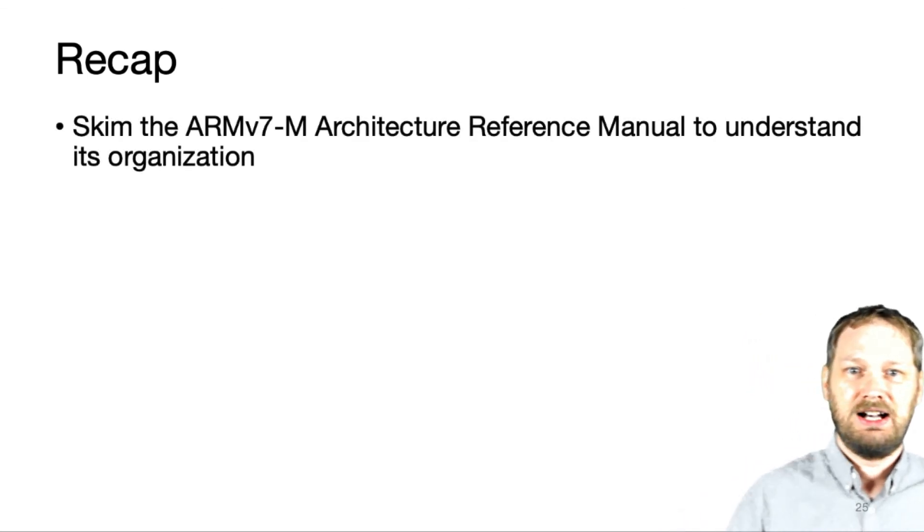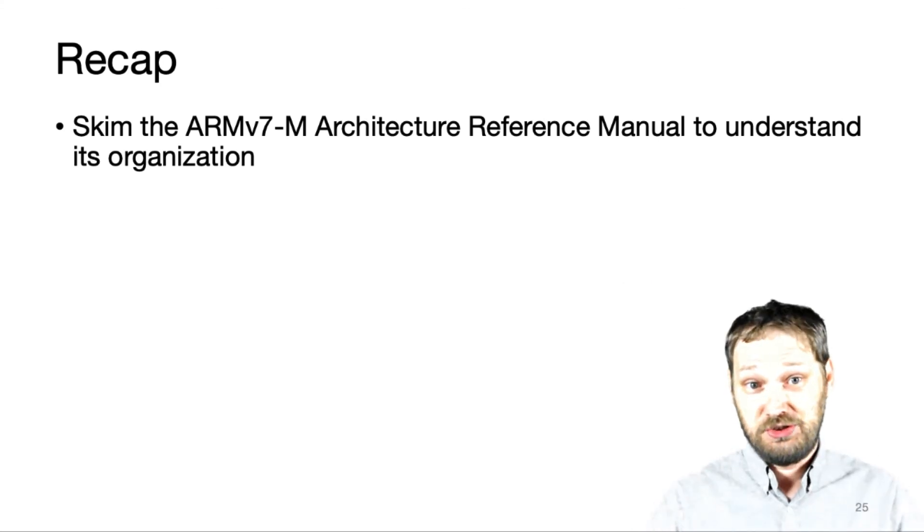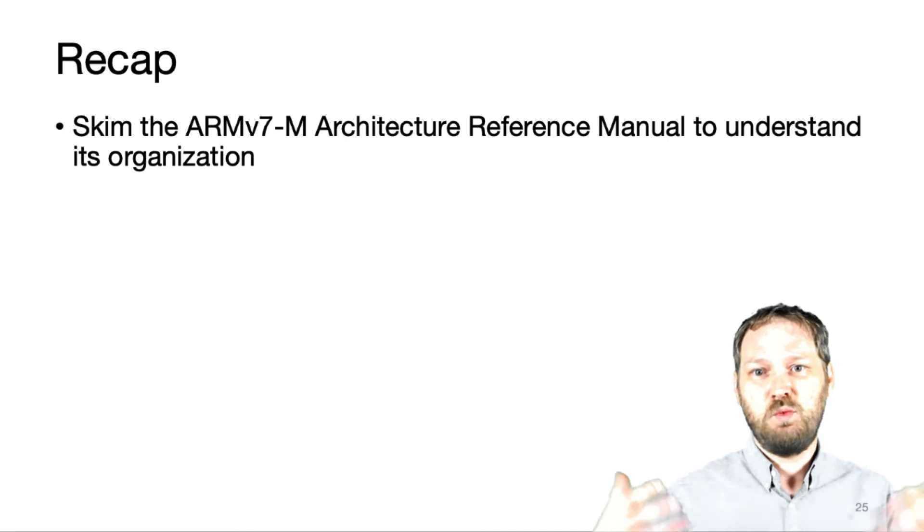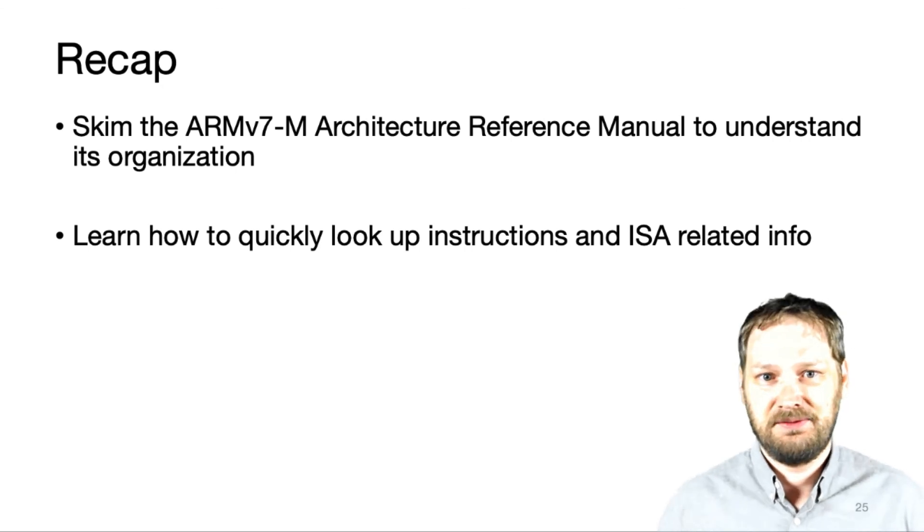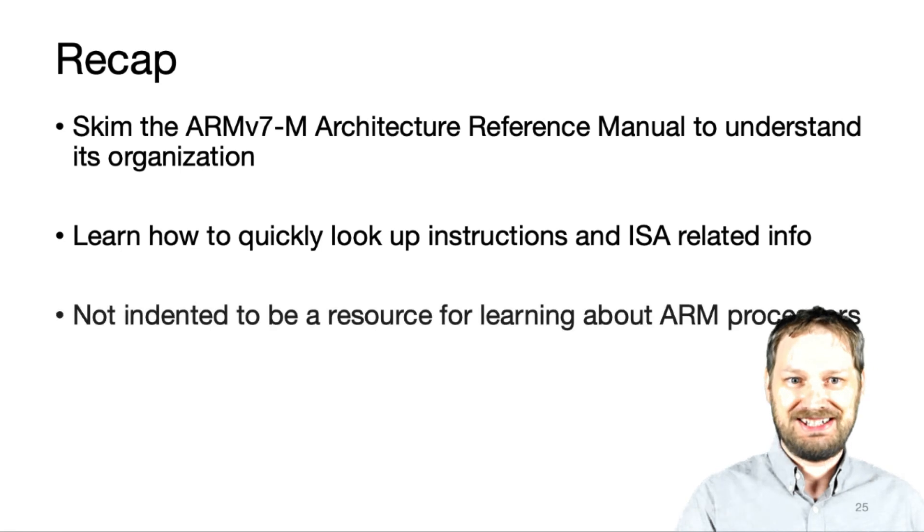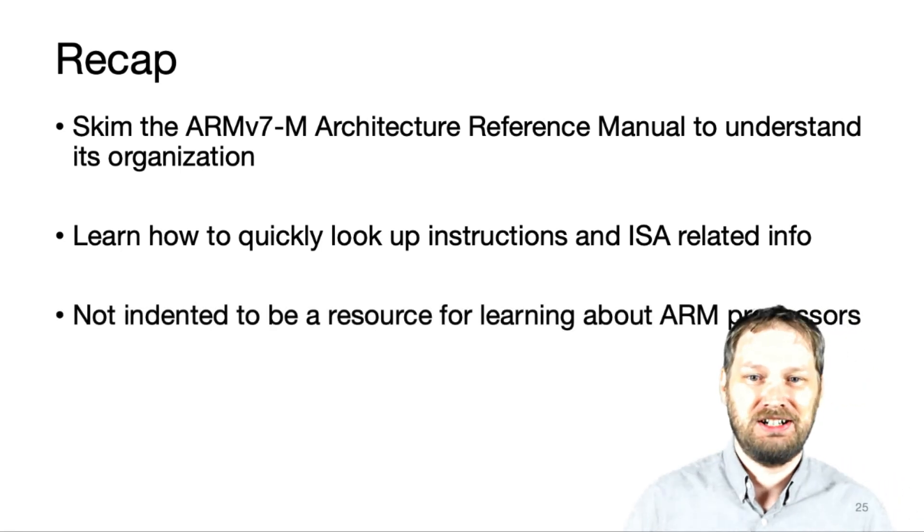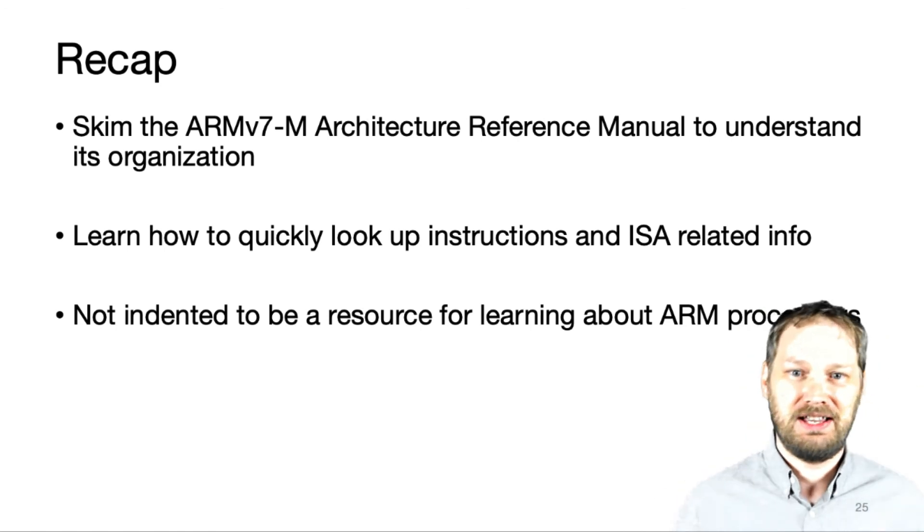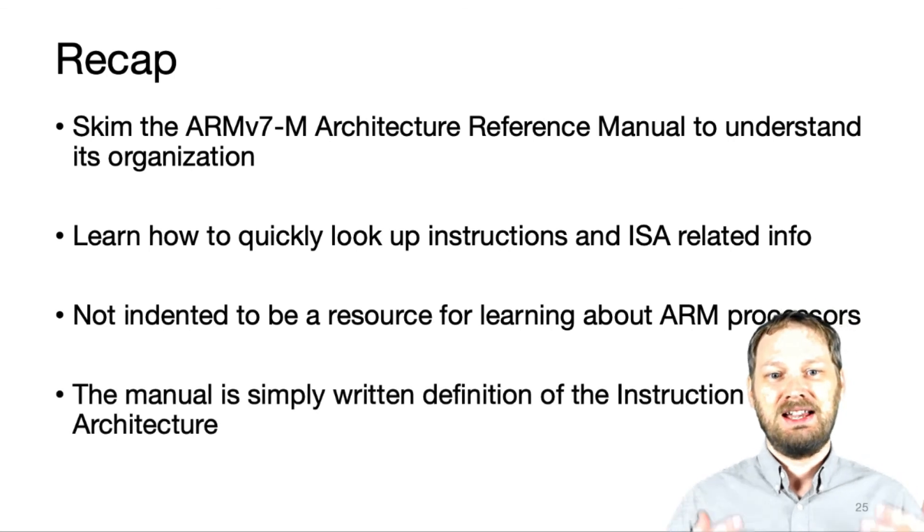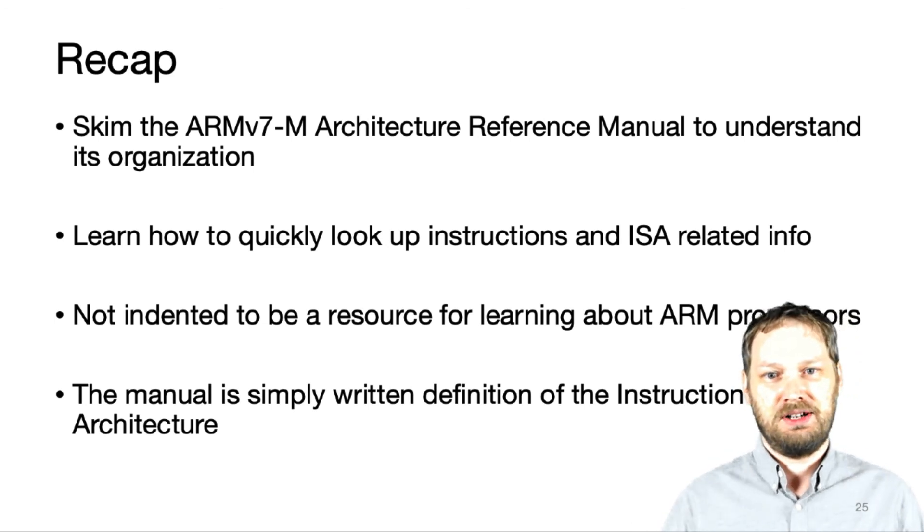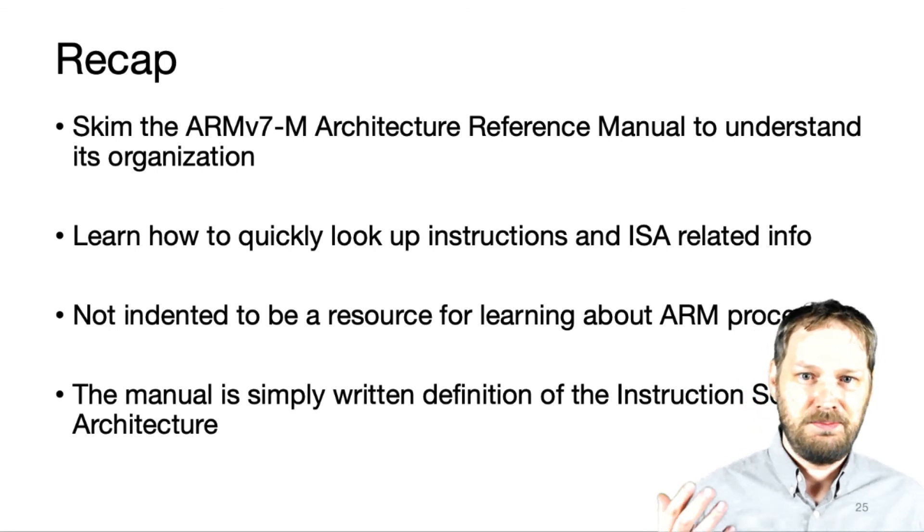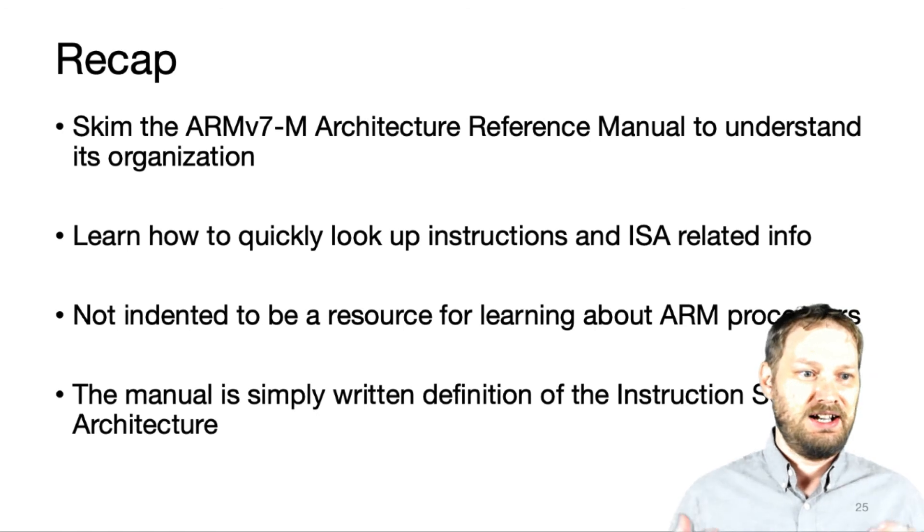All right. To recap, the goal here is that you should be able to skim the reference manual, basically understand what information is in there, so that you can quickly look up instructions or other ISA related info. The reference manual is not intended to be a source for learning about the ARM processor. It's not like you're going to read it like a textbook and then magically be able to understand all aspects. The thing is that this is really just an instantiation, a written instantiation of the instruction set architecture, and is really only intended for referencing. All right. So with that, I hope you have a better understanding of how to use the manual. You won't be intimidated by the arcane and kind of crazy formatting of some of the instructions. And I hope you'll be able to get the information you need out of it. Thanks.